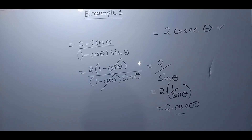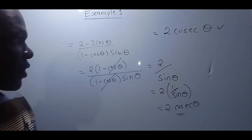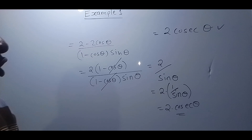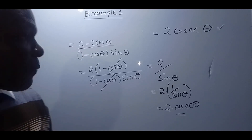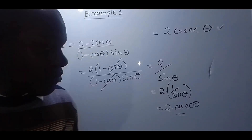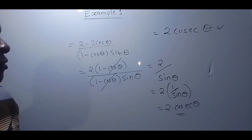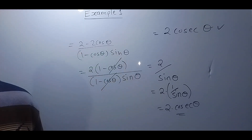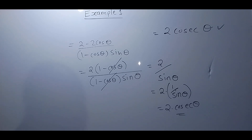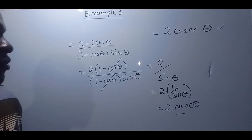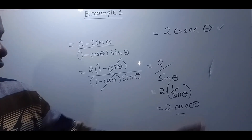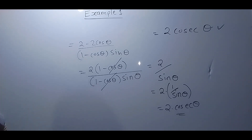To prove a trigonometric identity, you simply identify the appropriate methodology. If the expression involves two fractions being added, you first start by looking for the LCM, as we've done in this case.